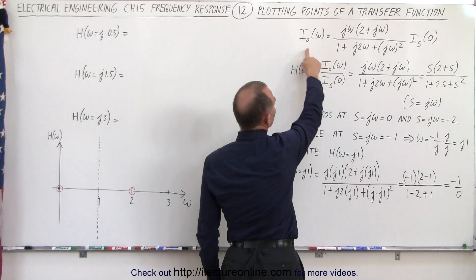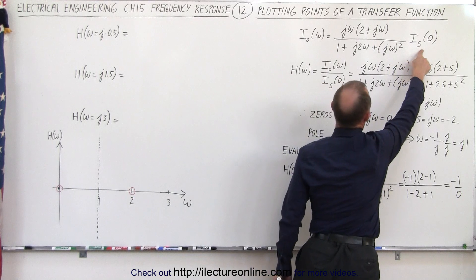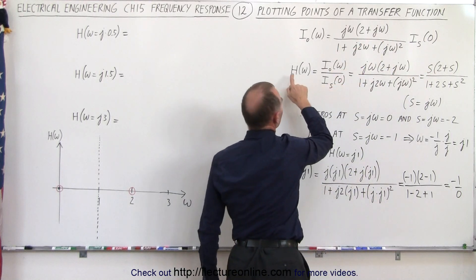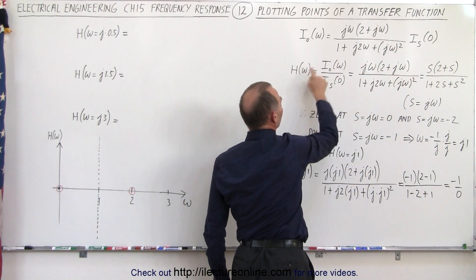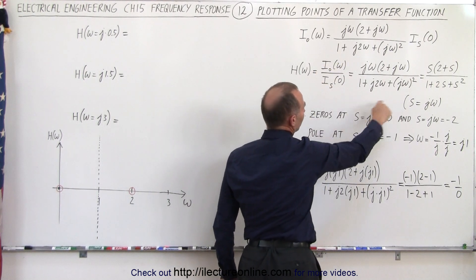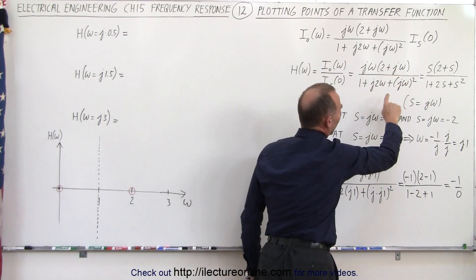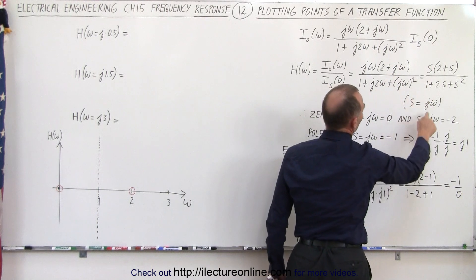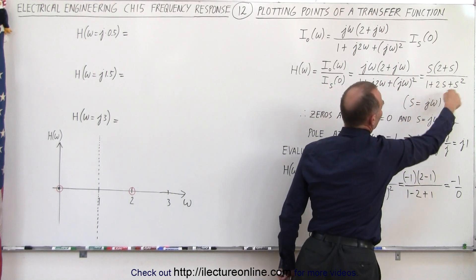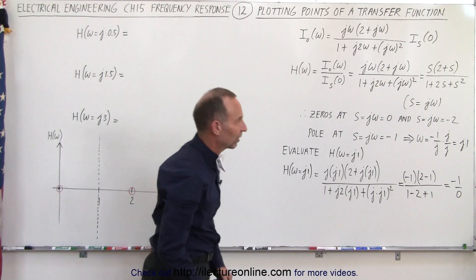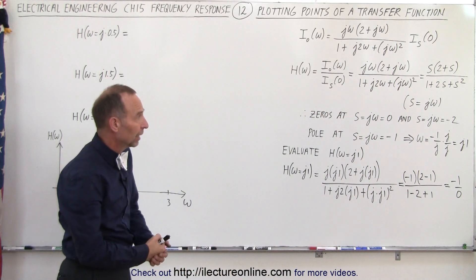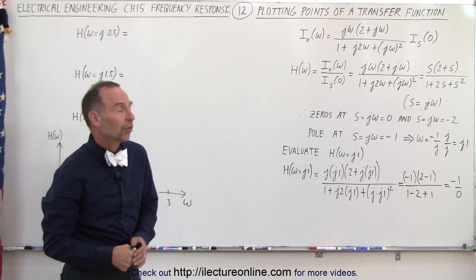Notice we had the output current and the source current — this was the transfer function. The transfer function is defined as the output current over the input current. And if we replace what we call jω with s, we have a simplified transfer equation that we can easily solve for zeros in the numerator and poles in the denominator.